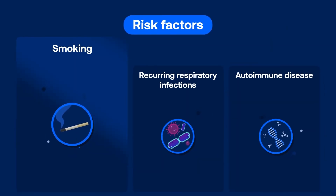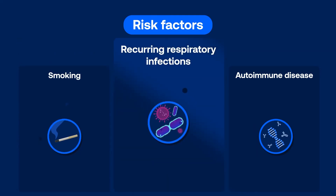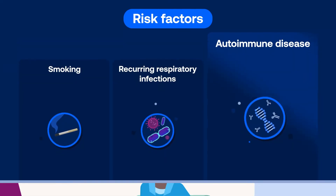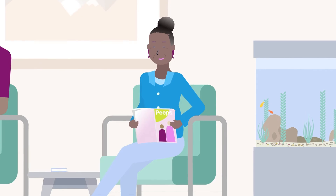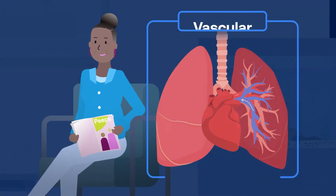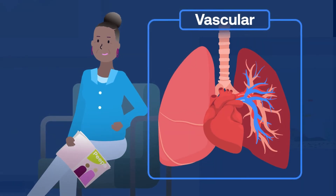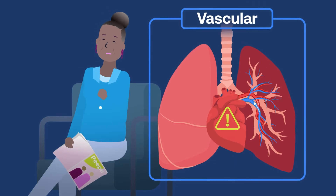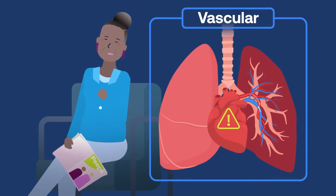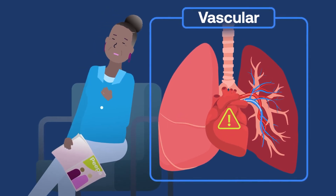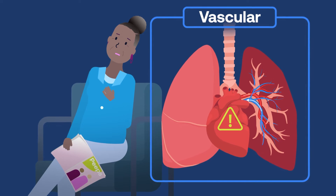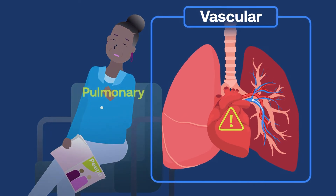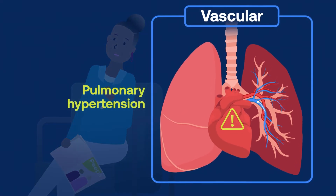A wide variety of potential risk factors exist for developing an airway disease, such as exposure to tobacco smoke, recurring respiratory infections, or having an autoimmune disease. Finally, vascular lung diseases affect the blood vessels in the lungs, meaning your heart and lungs have a hard time working together to circulate blood to and from your lungs.